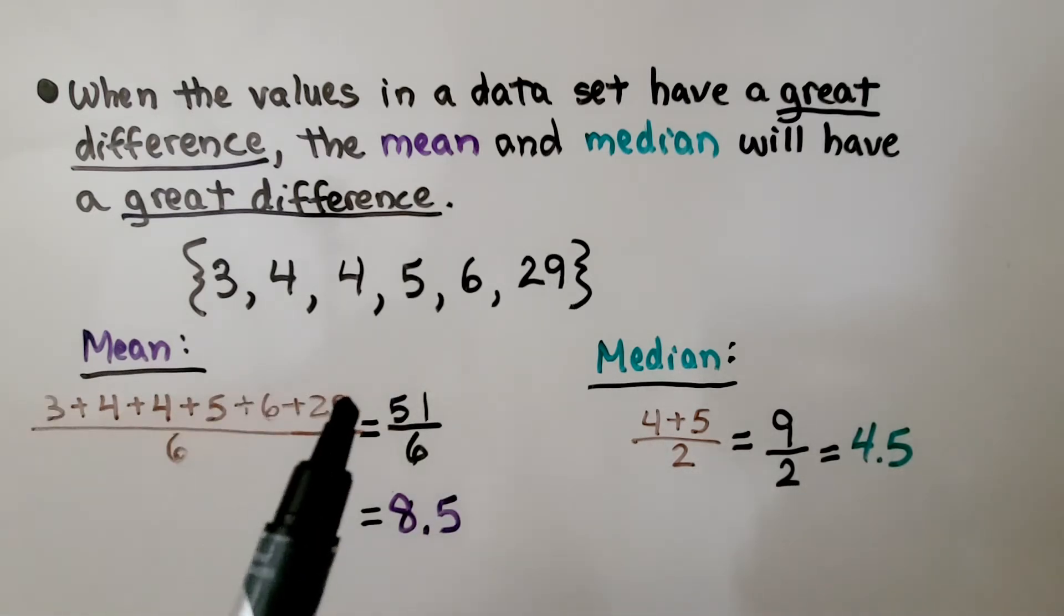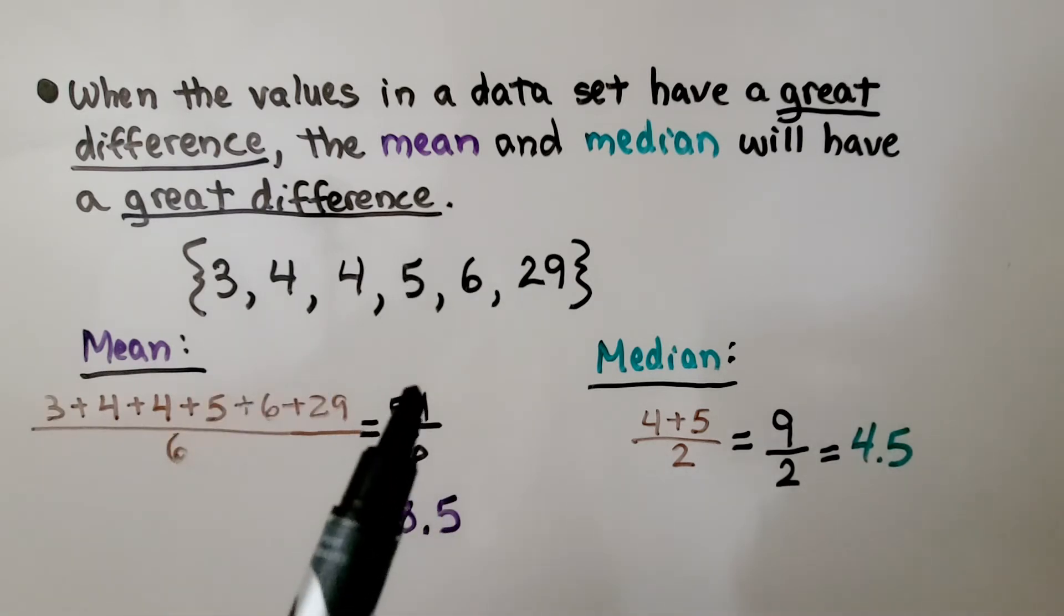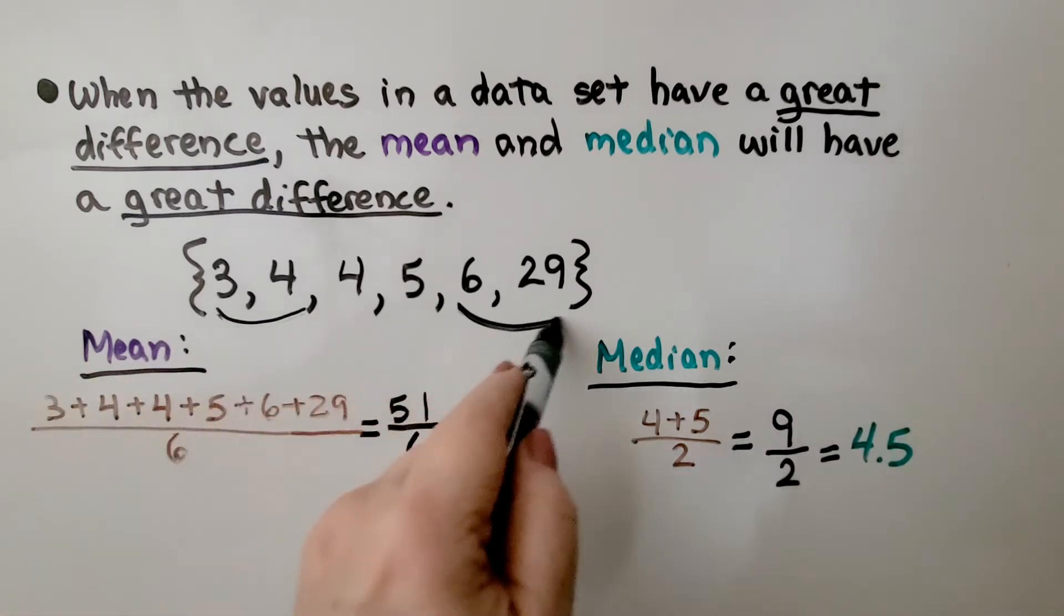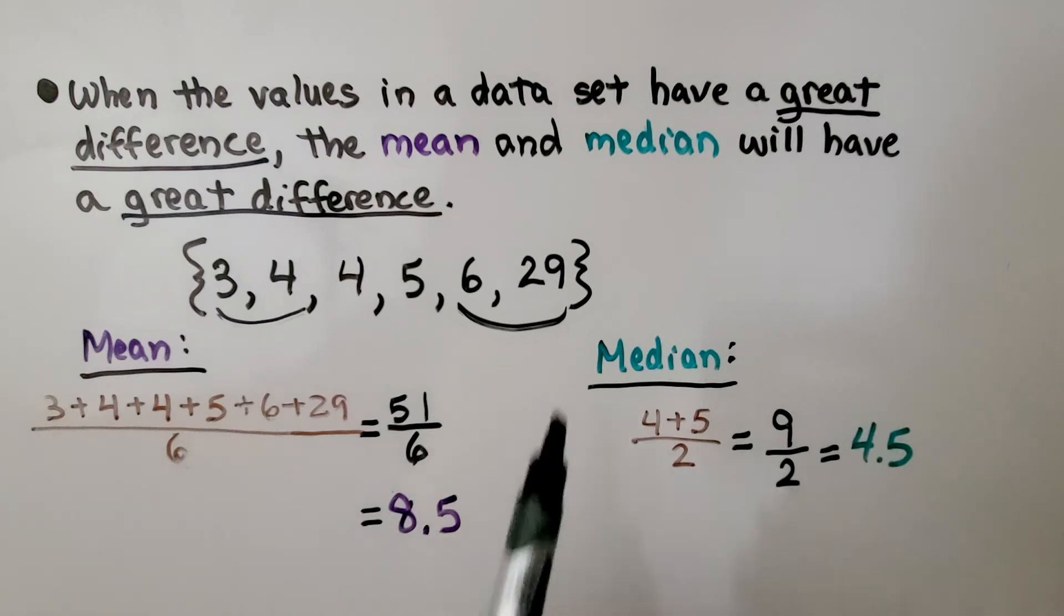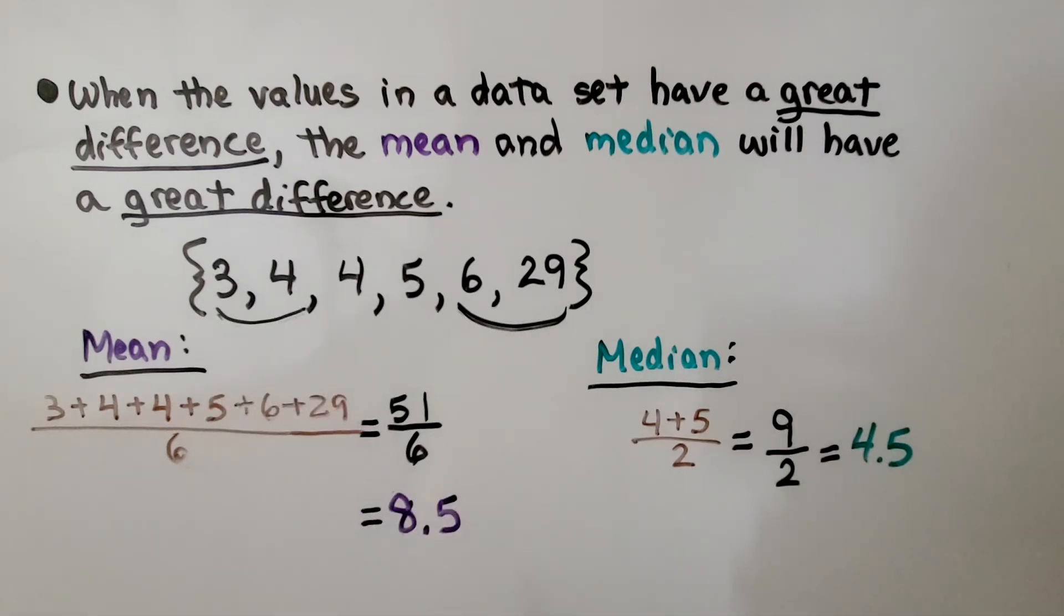The mean, we add up these values and because there's 6 values, we divide it by 6. We get 51 divided by 6. That gives us a mean of 8 and a half. The median, we look here. We've got 2 digits on this side, 2 digits on this side. So we have a 4 and a 5 in the middle. We add the 4 plus 5 and get 9, and because we added the two numbers together, we're going to divide it by 2. We get 4 and 5 tenths. So because of this 29 and there was such a great difference of values, the value for the mean and the value for the median have a great difference.